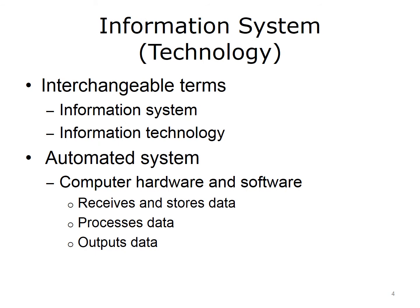The next definition closely related to information management and informatics is information system or technology. AHIMA defines information system as an automated system that uses computer hardware and software to record, manipulate, store, recover, and disseminate data — a system that receives and processes input and provides output, often used interchangeably with information technology, IT. When you think of information technology, some things that should come to mind are computer networks, database and systems administration, security, and programming.